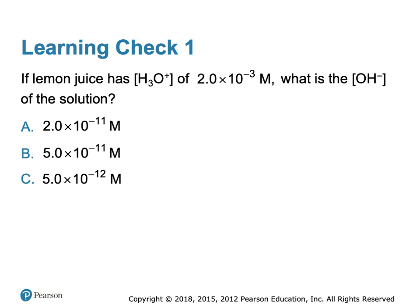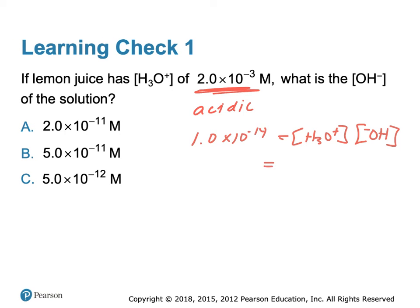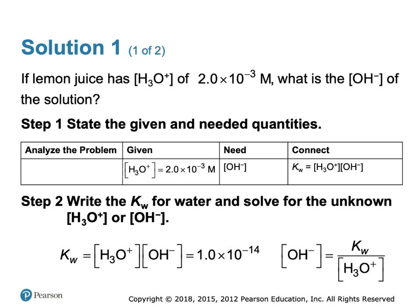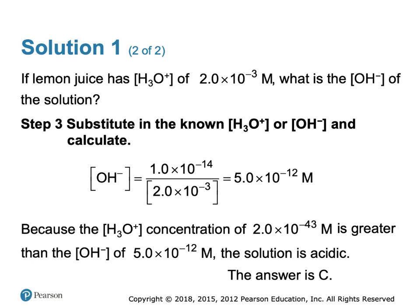Learning check: if lemon juice has a hydronium concentration of 2 × 10⁻³ molar, what is the hydroxide concentration? We recognize this is an acidic solution because the hydronium concentration is more than 1 × 10⁻⁷. We take 1.0 × 10⁻¹⁴ = [H₃O⁺][OH⁻], so 1.0 × 10⁻¹⁴ = 2 × 10⁻³ × [OH⁻]. The answer is 5 × 10⁻¹² molar — using 2 significant figures to match the given value. These are the types of KW calculations you'll need to perform. In the next video, we'll get into pH, which uses the log of KW.